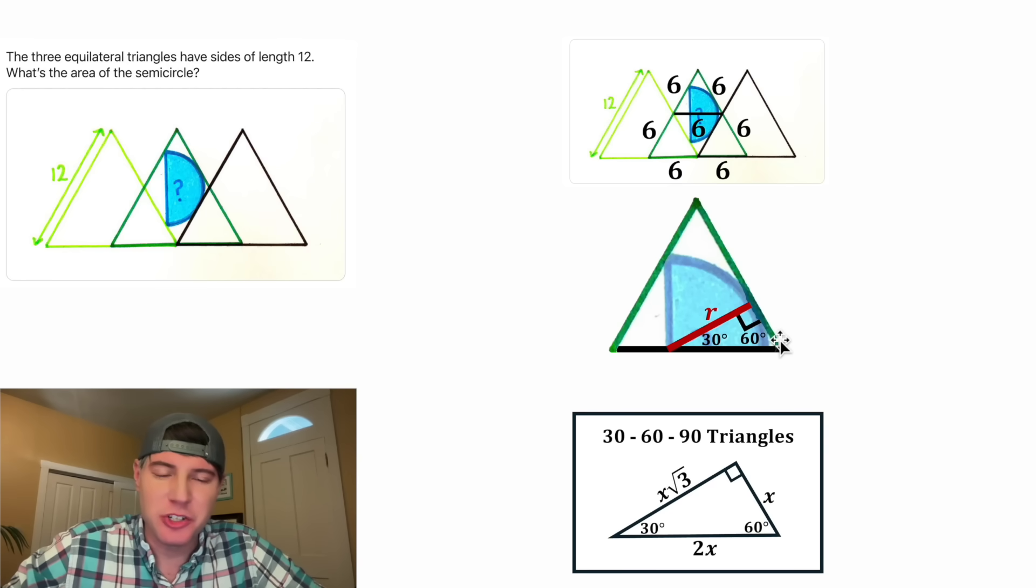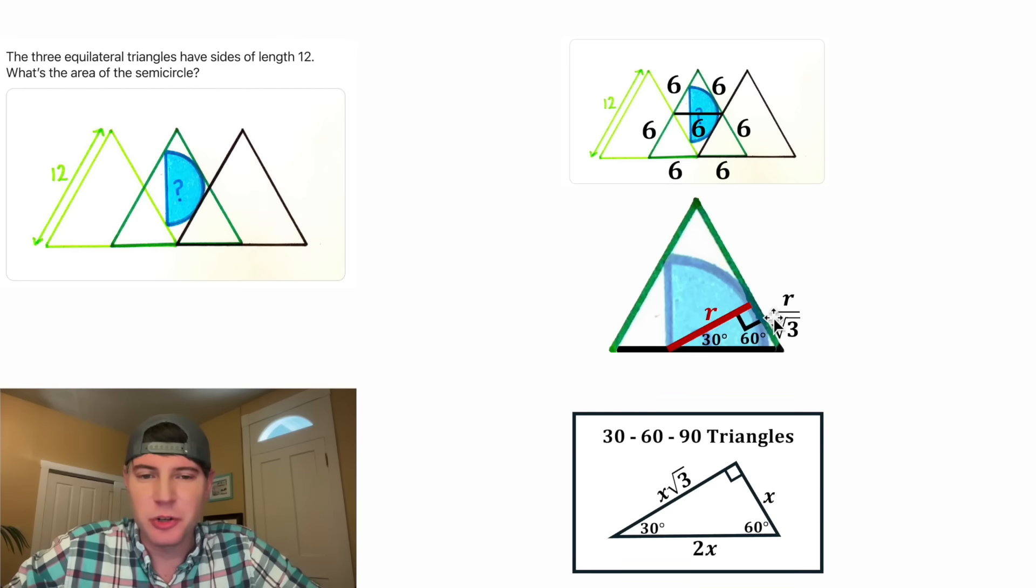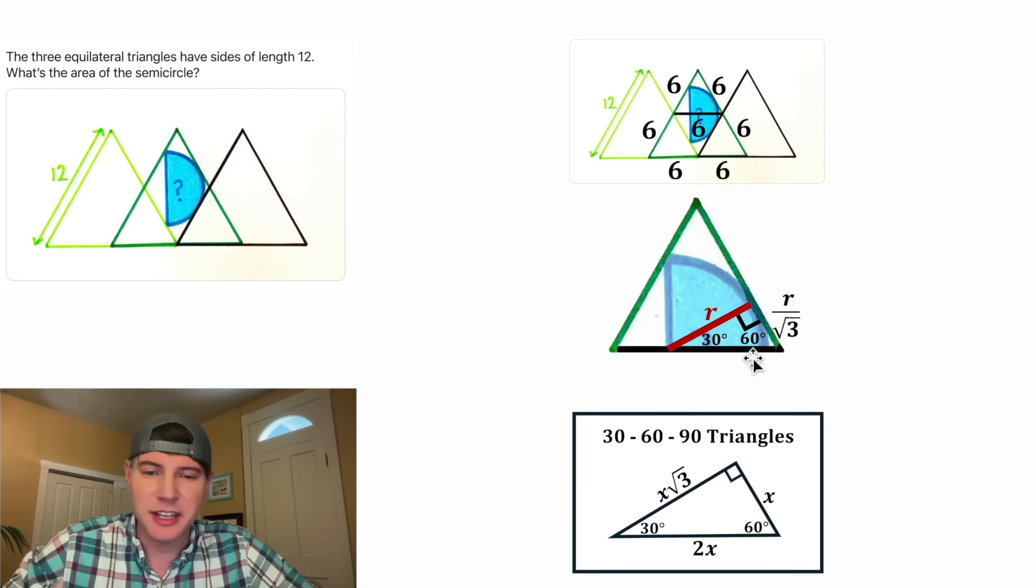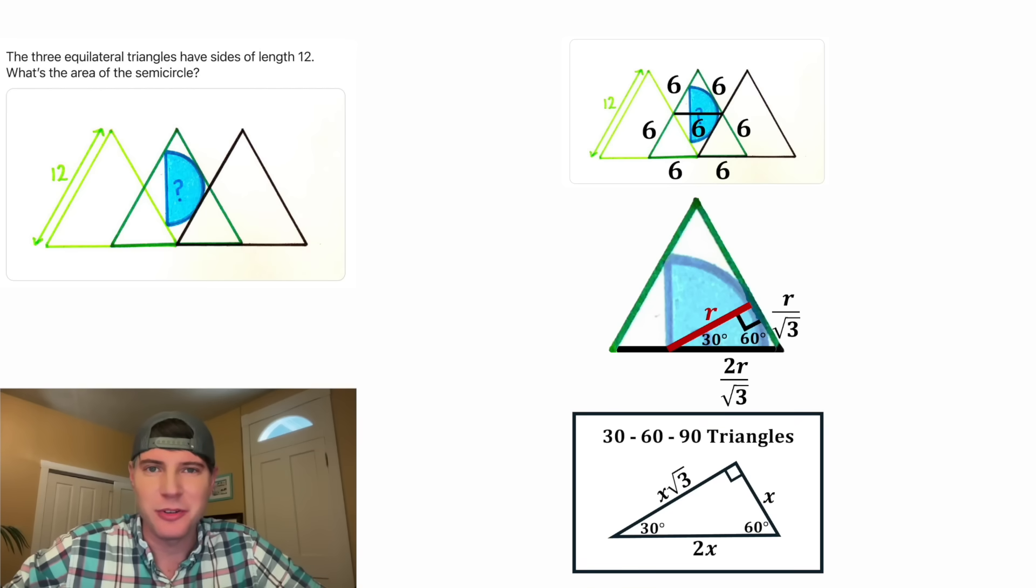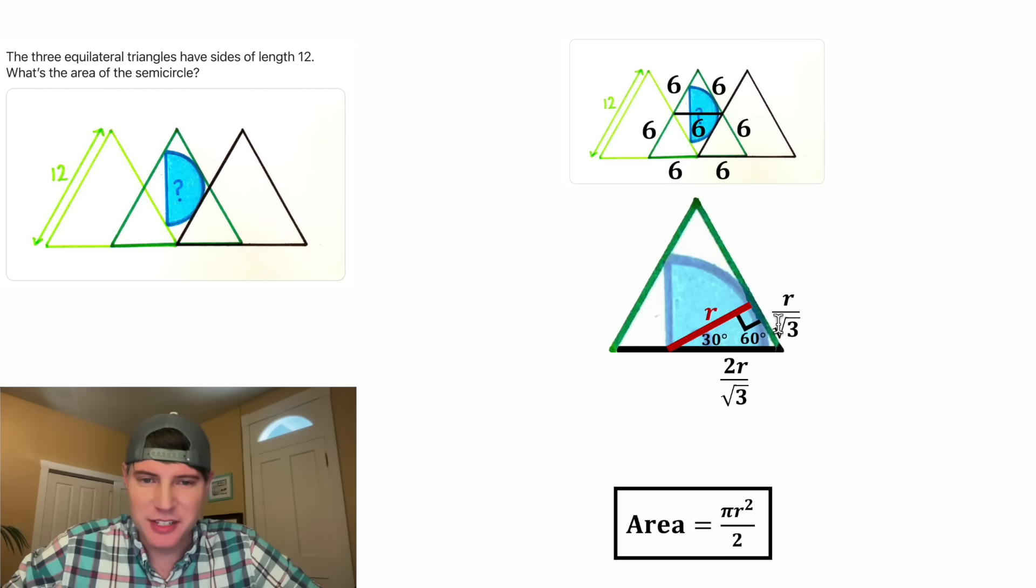Well instead of multiplying the shortest side by √3 to get this side, we can divide this side by √3 to get the shortest side. So this shortest side will be equal to r/√3. And then from here to get the hypotenuse we can double the shortest side. So this hypotenuse would be equal to 2r/√3. So now we have these three sides of this little triangle in terms of little r.